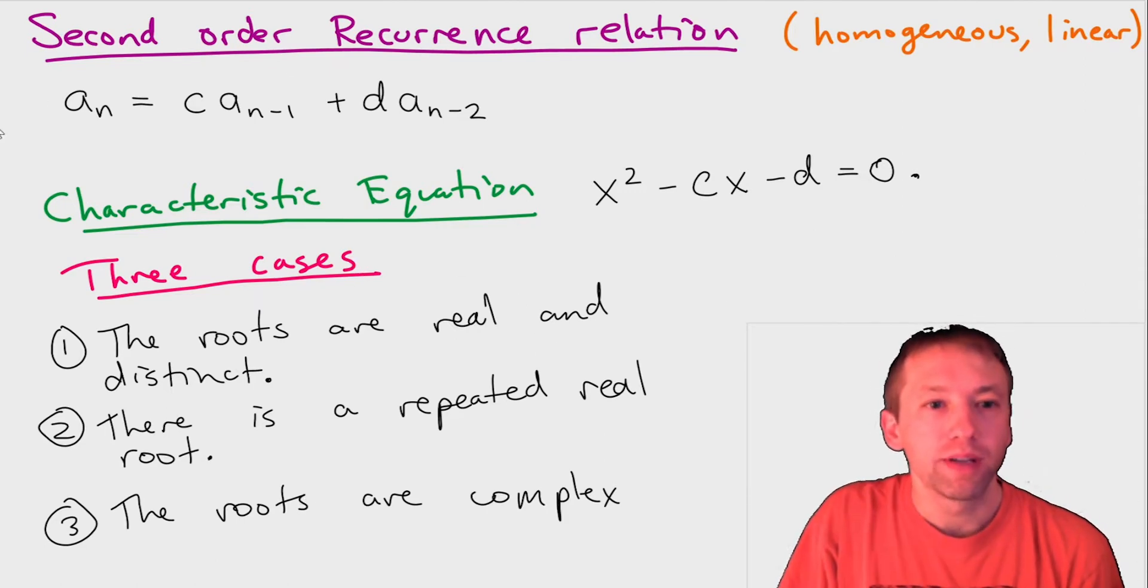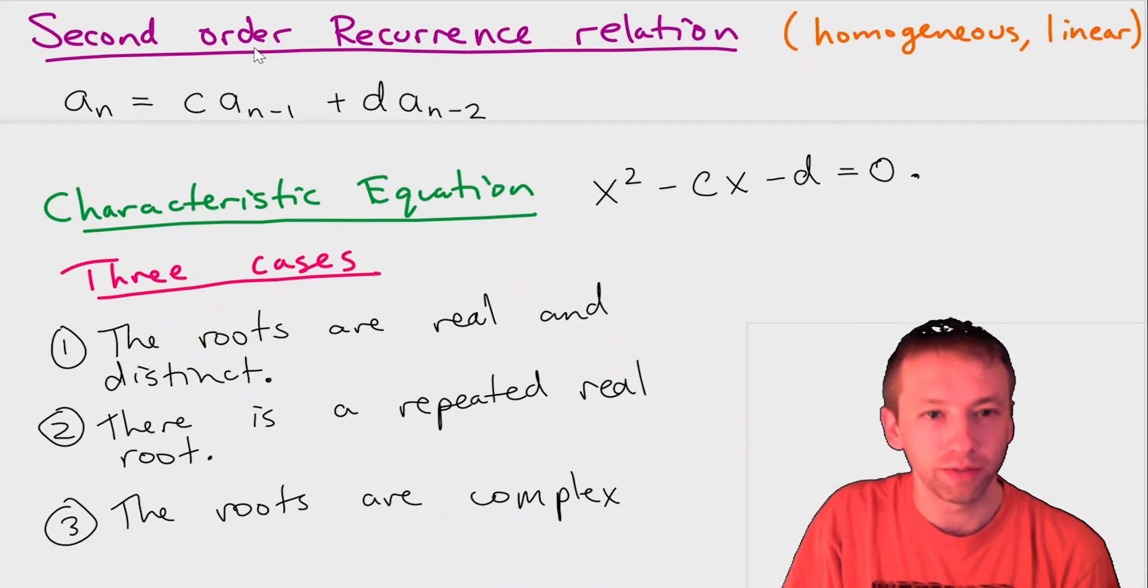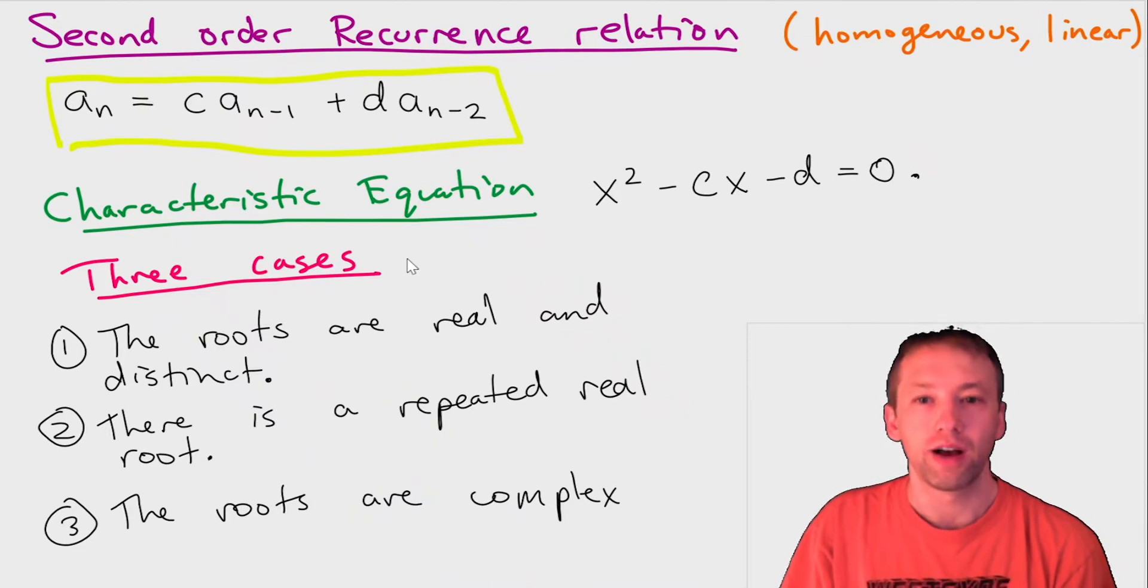Just to recap, the types of relations we're talking about are things that look like this: a_n is equal to a constant times a_{n-1} plus some constant times a_{n-2}. Remember the method for solving this, we first come up with the characteristic equation, which in this case is x² - cx - d.